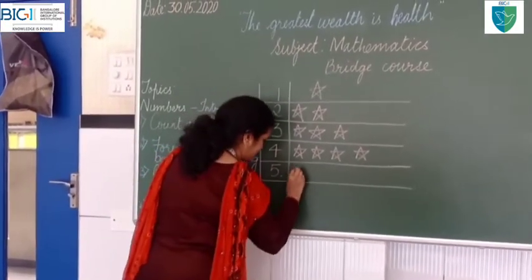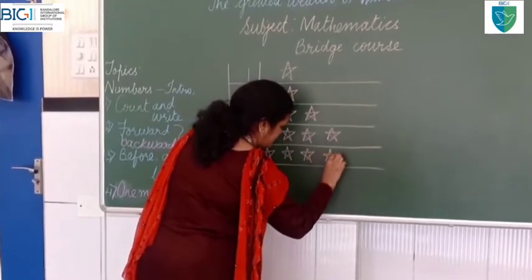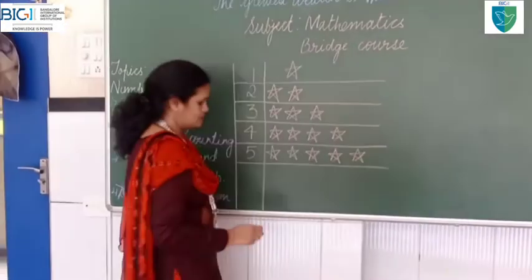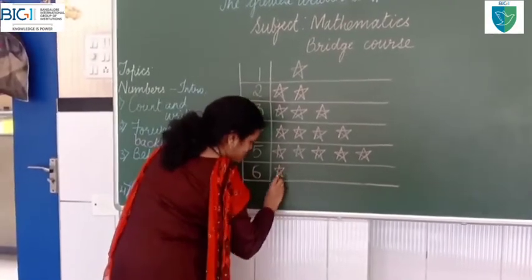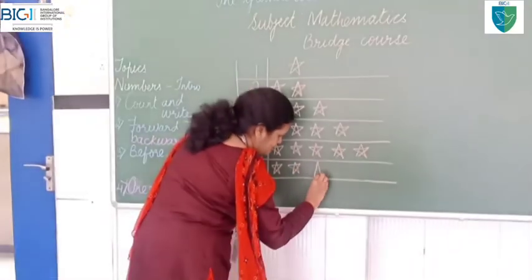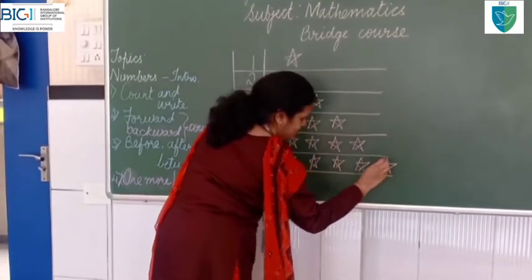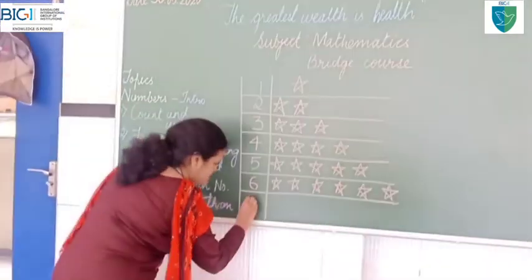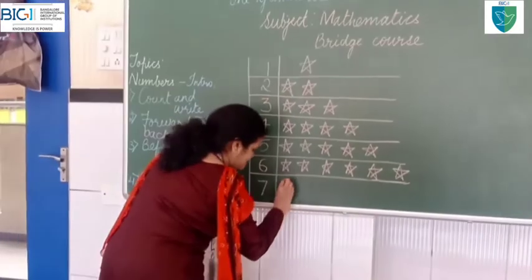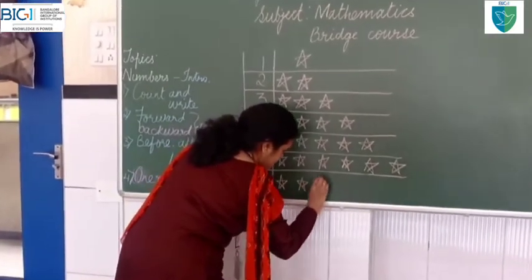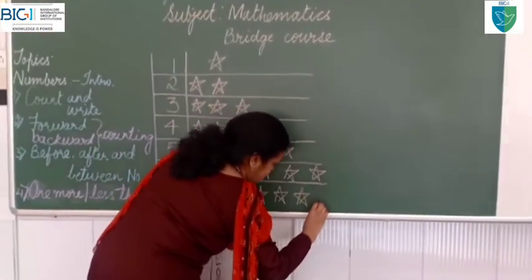Five — I will be drawing five stars: one, two, three, four, five. Now, six: one, two, three, four, five, six. The next number is seven. How many stars do I have to draw? I will be drawing seven stars: one, two, three, four, five, six, seven.